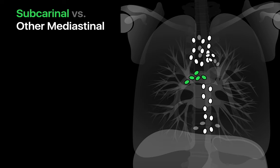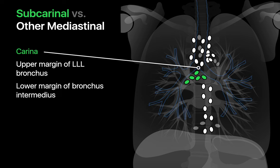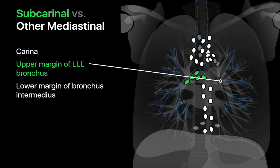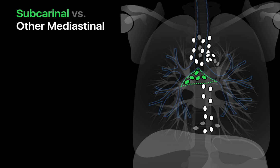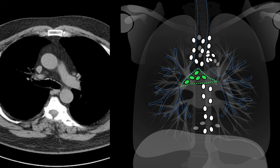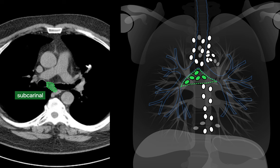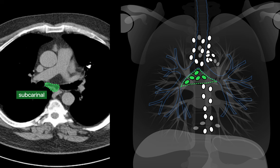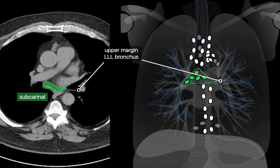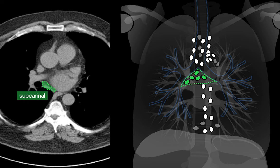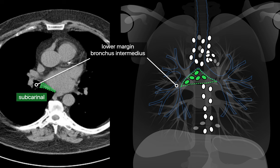Let's begin with number one — what's subcarinal in the mediastinum and what's not? Three landmarks define the territory of the subcarinal station: the carina, the upper margin of the left lower lobe bronchus, and the lower margin of the bronchus intermedius. If you scroll inferiorly on CT and encounter the carina, the subcarinal station begins on the next slice, extending laterally to the walls of both bronchi, anteriorly to the cardiac space and posteriorly to the esophagus, until you reach the origin of the left lower lobe bronchus, after which the territory drifts rightward, stopping after the end of the bronchus intermedius.